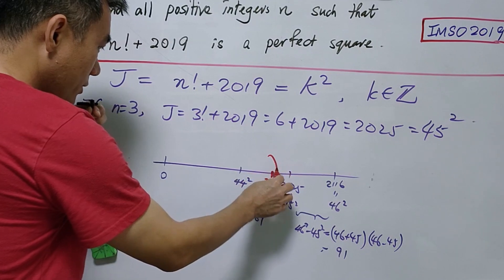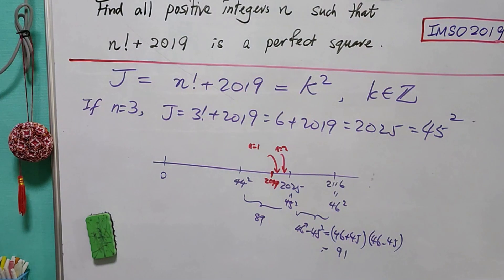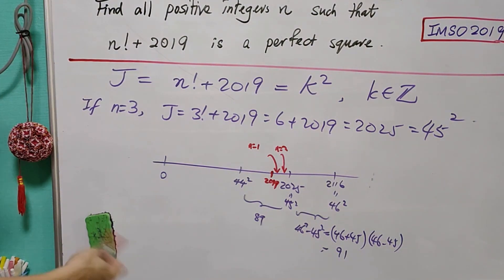We see that 2019 is somewhere here. When n = 1, and when n = 2, you have somewhere close to 2025, and both of them are not perfect squares.